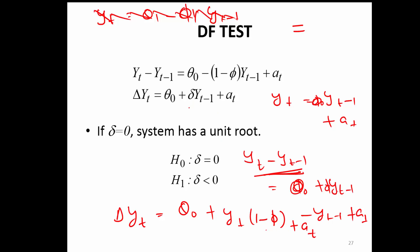We just denote this particular term with some other symbol. So this particular term, if it is equal to 0, then we have a unit root, otherwise not.